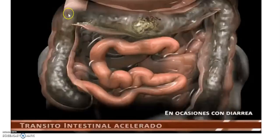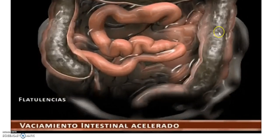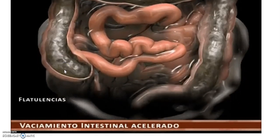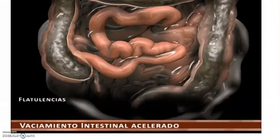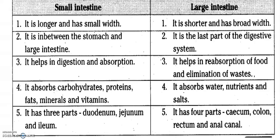After absorption in the small intestine, the food passes on to the large intestine. The main function of the large intestine is absorption of water and some salts required by the body. The difference between large and small intestine is: the small intestine is longer in length but smaller in width, whereas the large intestine is shorter but broader. The small intestine is responsible for both digestion and absorption, while the large intestine helps in reabsorption and elimination of waste. The small intestine absorbs carbohydrates, proteins, fats, minerals and vitamins, whereas the large intestine is responsible for absorption of water, nutrients and some salts.